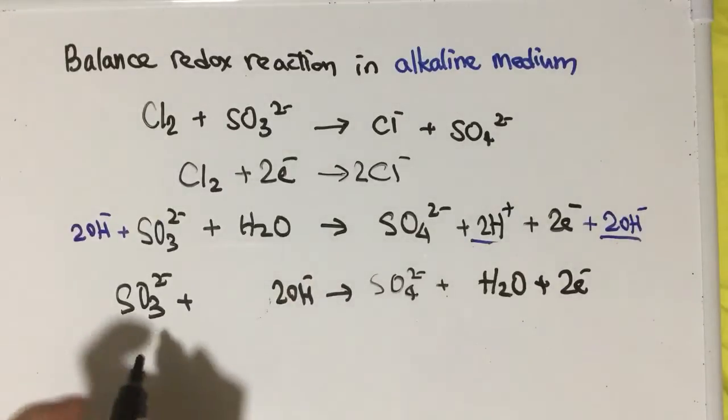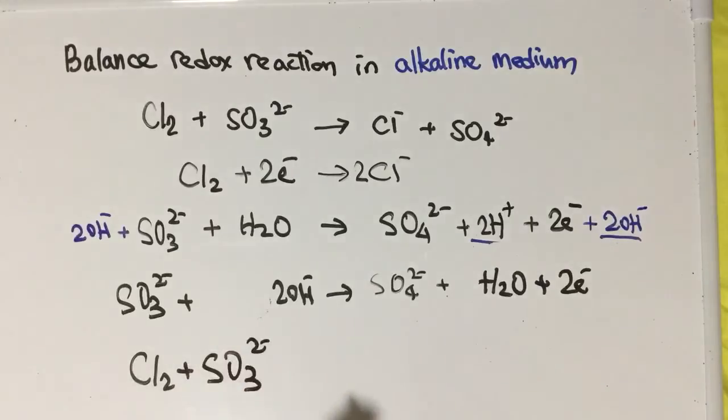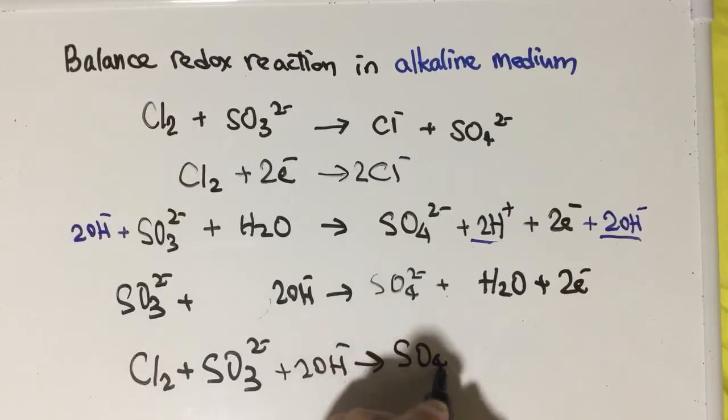But anyway, combine them: Cl₂ + SO₃²⁻ + 2OH⁻ will become SO₄²⁻ + 2Cl⁻ + H₂O.